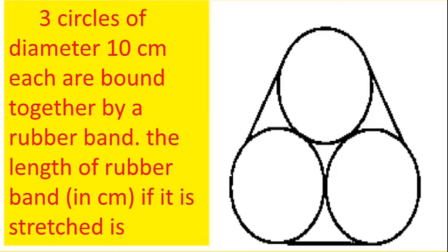The next question is, 3 circles of diameters 10 cm each bound together by a rubber band. The length of the rubber band in cm if it is stretched. So they are asking the length of the rubber band. How to do this? Since they are given 3 circles of diameter 10 cm,